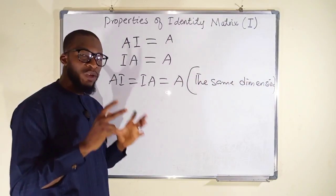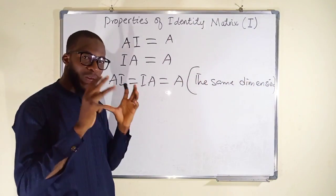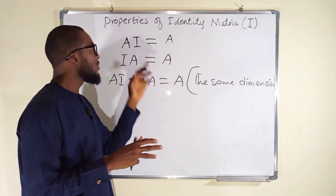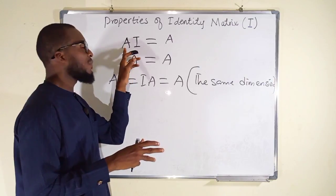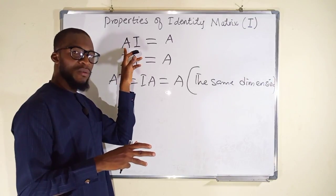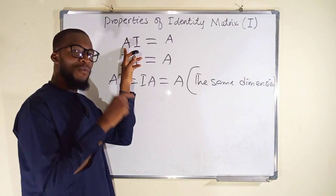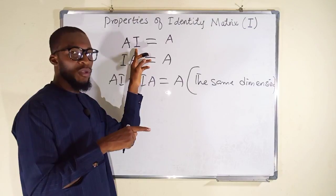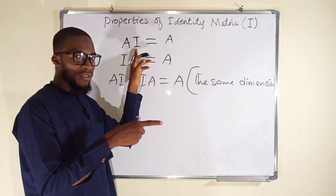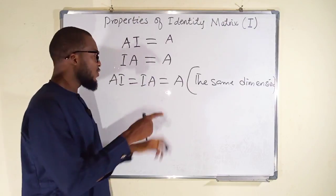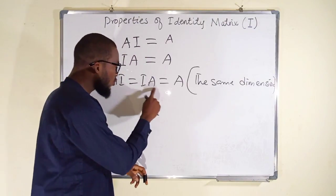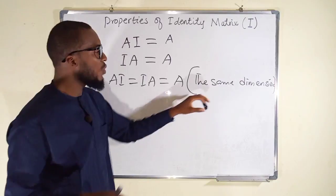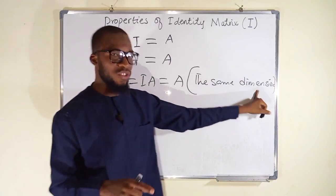You can only multiply matrices under a condition: the number of columns in the first matrix must be equal to the number of rows in the other matrix. This is why A·I = I·A is not always true — it is only true under this condition.